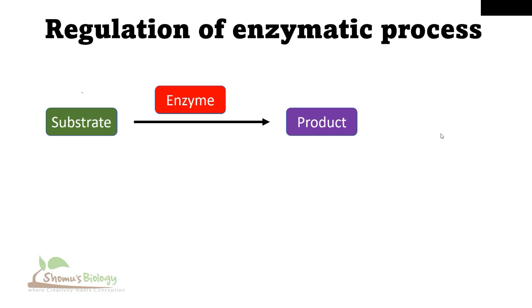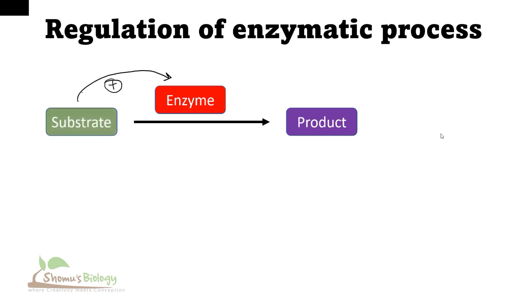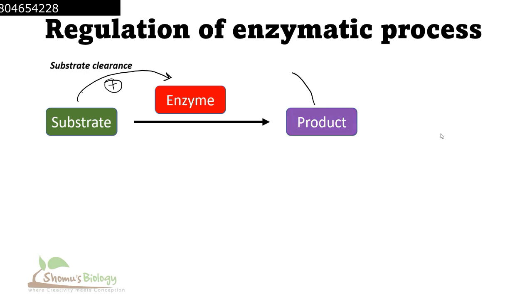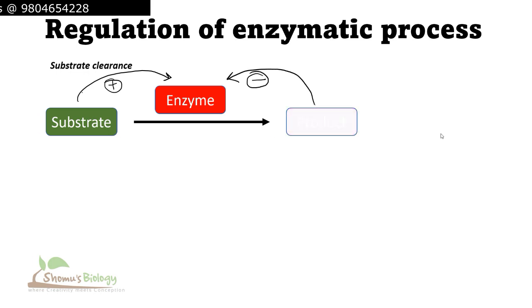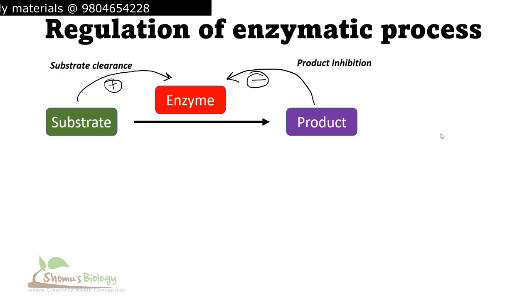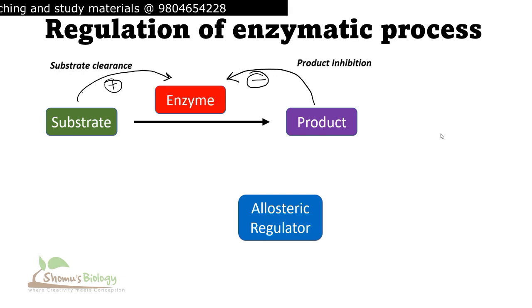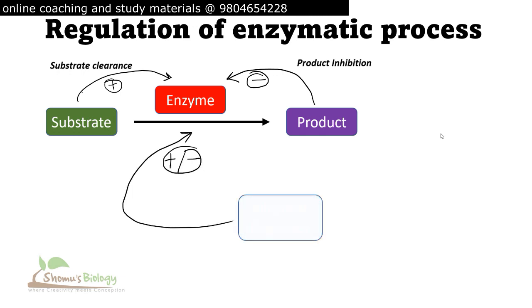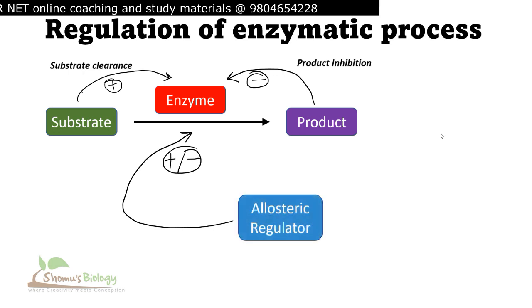All these enzymatic pathways are regulated in three different ways: substrate clearance, product inhibition, and allosteric regulation. Substrate clearance is when high substrate concentration positively influences the enzymatic reaction. On the other hand, high product concentration will always negatively influence the reaction — this is called product inhibition. Finally, an allosteric regulator molecule can bind to the allosteric site of the enzyme and either positively or negatively regulate enzyme activity.